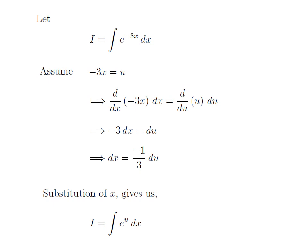Here I have substituted x in integral i by our assumed value. The integration i has now become integration of e to the power u into differential of x. Now I have substituted differential of x by minus 1 upon 3 into differential of u. So i is equal to the integration of e to the power u into minus 1 upon 3 into differential of u.